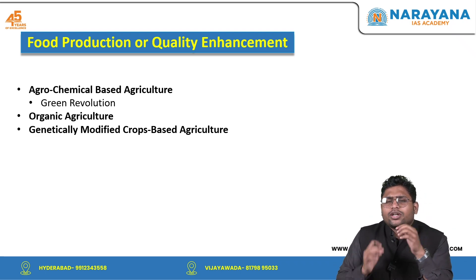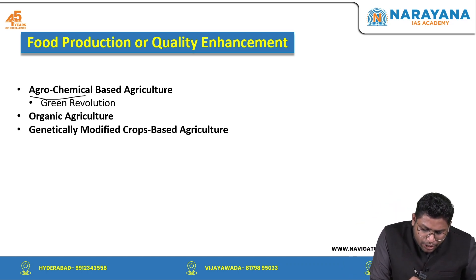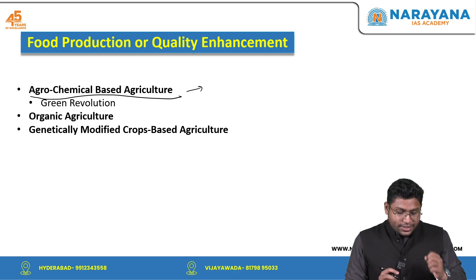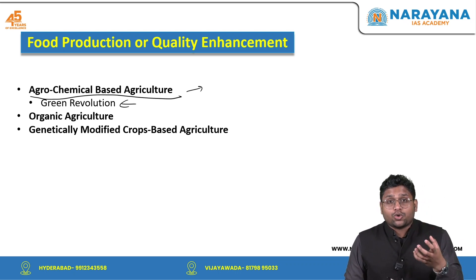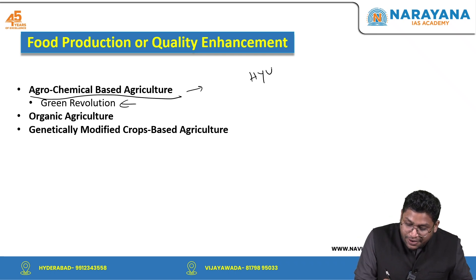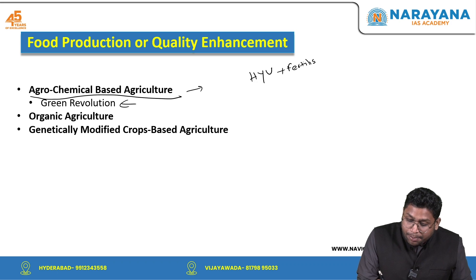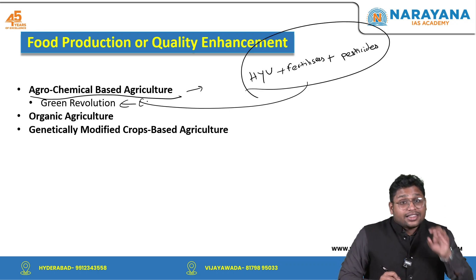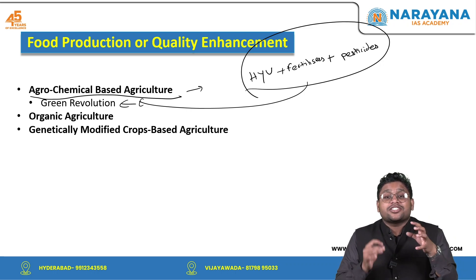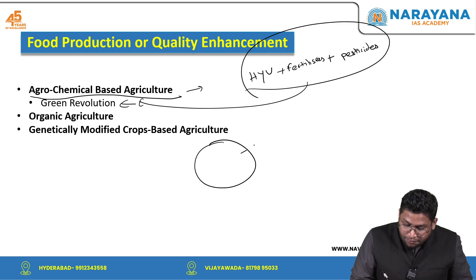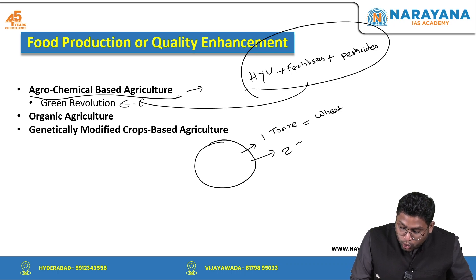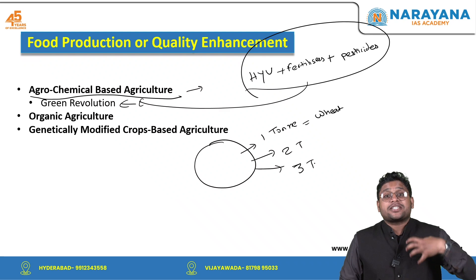Before biotechnology, what other options did we have? The first option was agrochemical-based agriculture. We started making use of chemicals and fertilizers to increase food production. For example, in the green revolution, we brought special HYV seeds, fertilizers, pesticides, and ensured irrigation water supply. When we provided all of this, food production in India increased substantially — from one tonne of wheat per land unit to two tonnes, then later three tonnes.